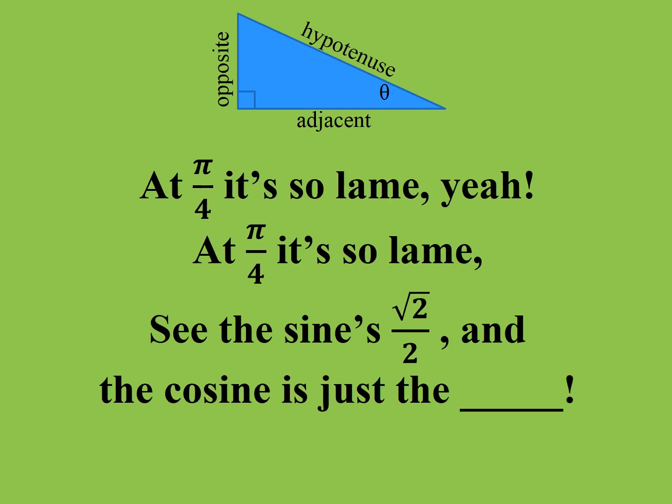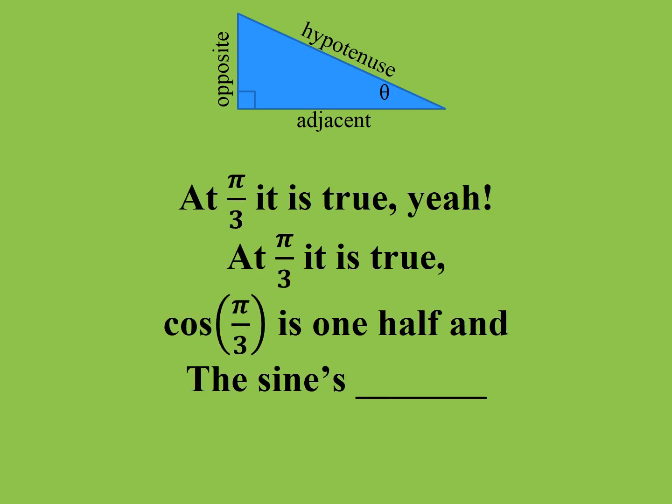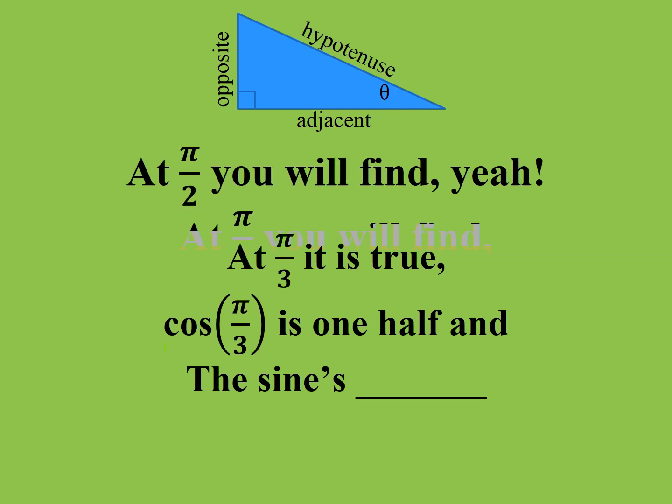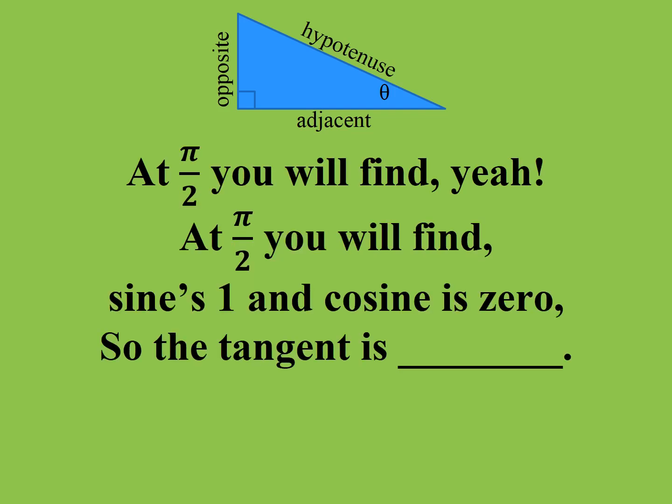At pi over 4, it's so lame. See the sine's root 2 over 2, and the cosine is just the same. At pi over 3, it is true. The cosine of pi over 3 is 1 half, and the sine's root 3 over 2. At pi over 2, you will find: sine's 1, and cosine is 0, so the tangent is undefined.